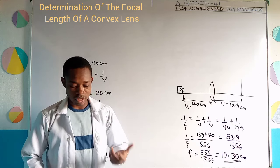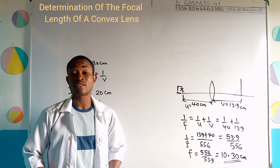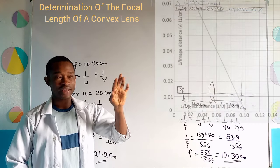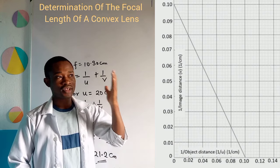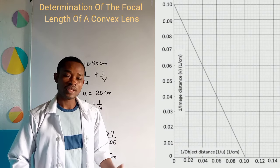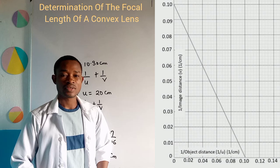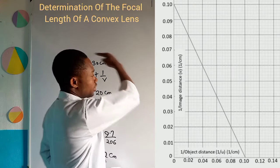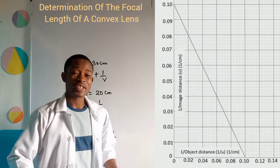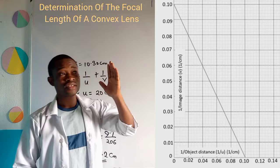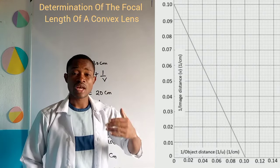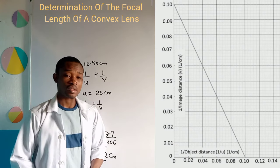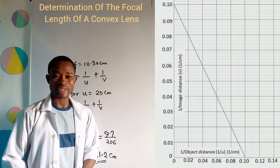Now you are asked to plot a graph of 1 over U against 1 over V. Take a look at the screen — this is the shape of the graph I obtained. You can see it is a negative graph, and that is what is expected. The graph has intercepts on both the vertical and horizontal axes — that is the 1 over U and 1 over V axes.